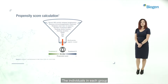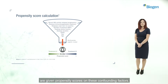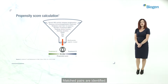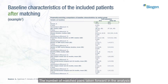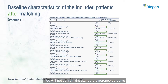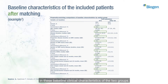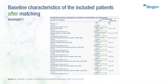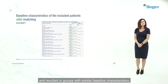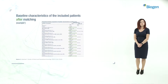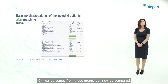The individuals in each group are given propensity scores on these confounding factors, and matched pairs are identified. The number of matched pairs taken forward in the analysis is lower than the number treated in each group. You will notice from the standardised difference percents that there are now no significant differences in the baseline clinical characteristics of the two groups. Propensity score matching has taken two heterogeneous groups and resulted in groups with similar baseline characteristics, and clinical outcomes from these groups can now be compared.